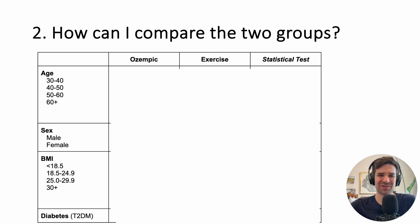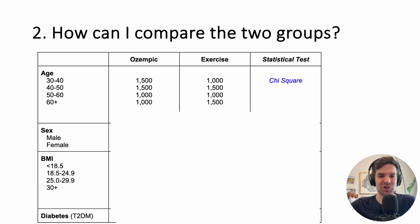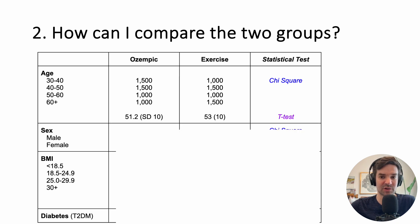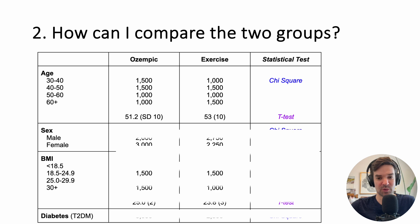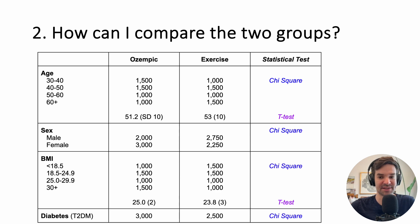Here's an example in a made-up Table 1. If the variable is categorical, you use a chi-square test; if it's continuous, you report a t-test. This isn't rocket science.